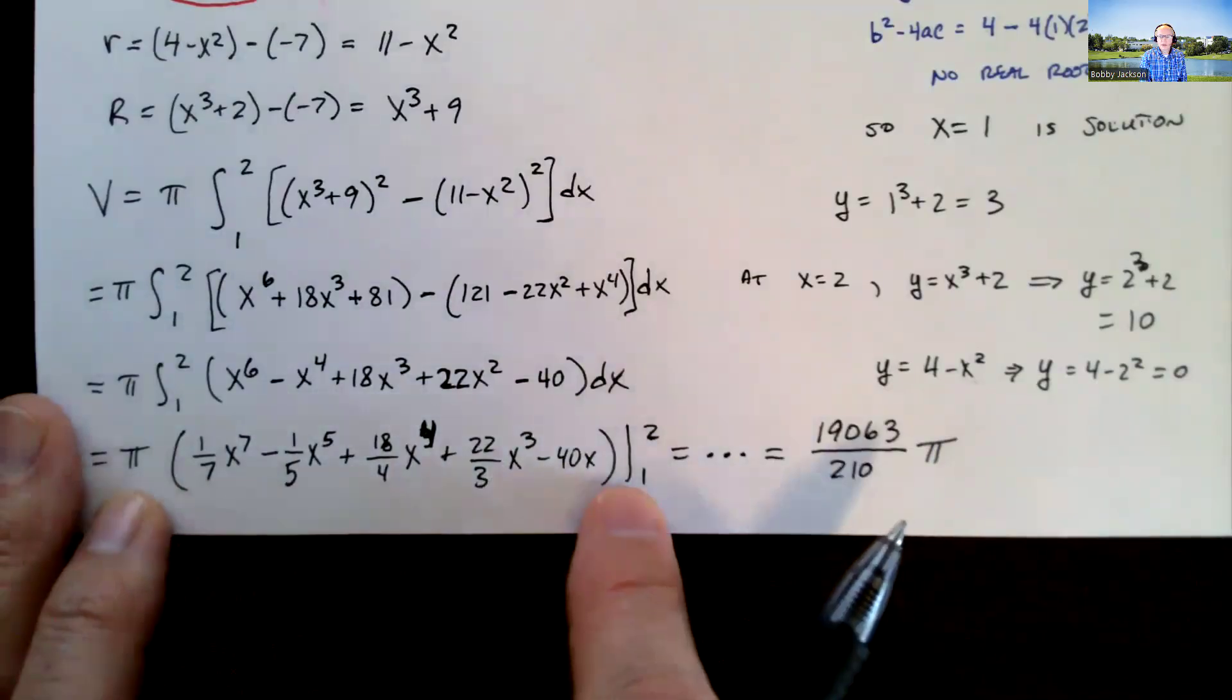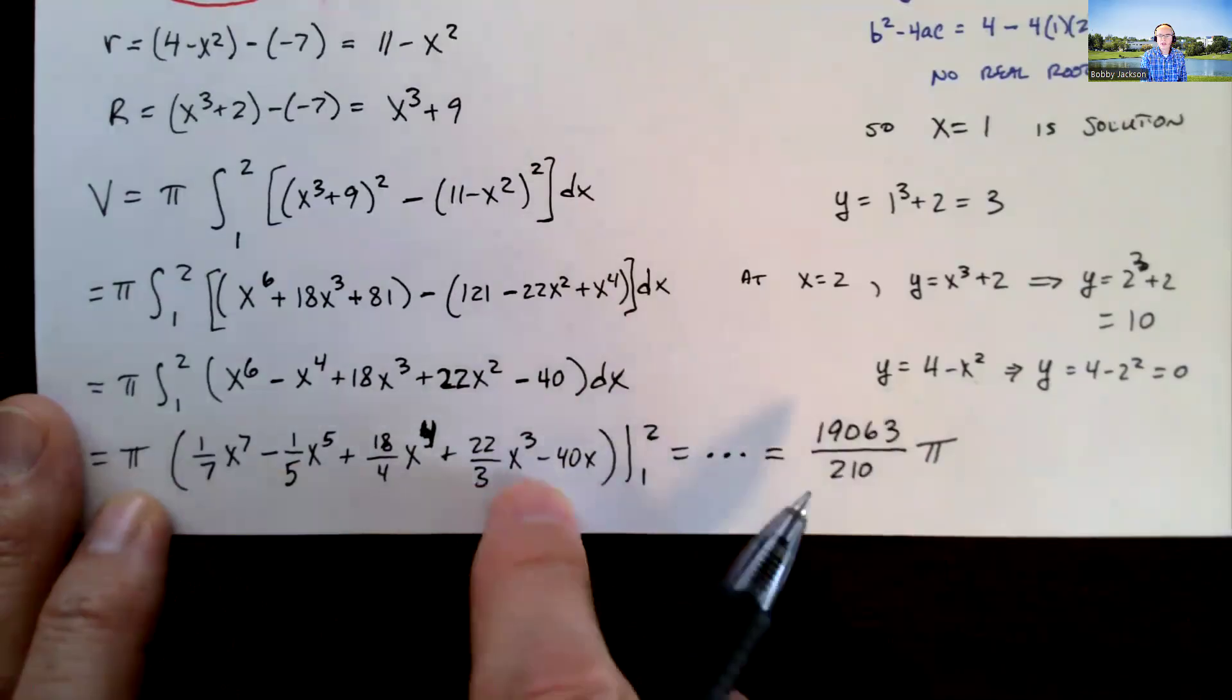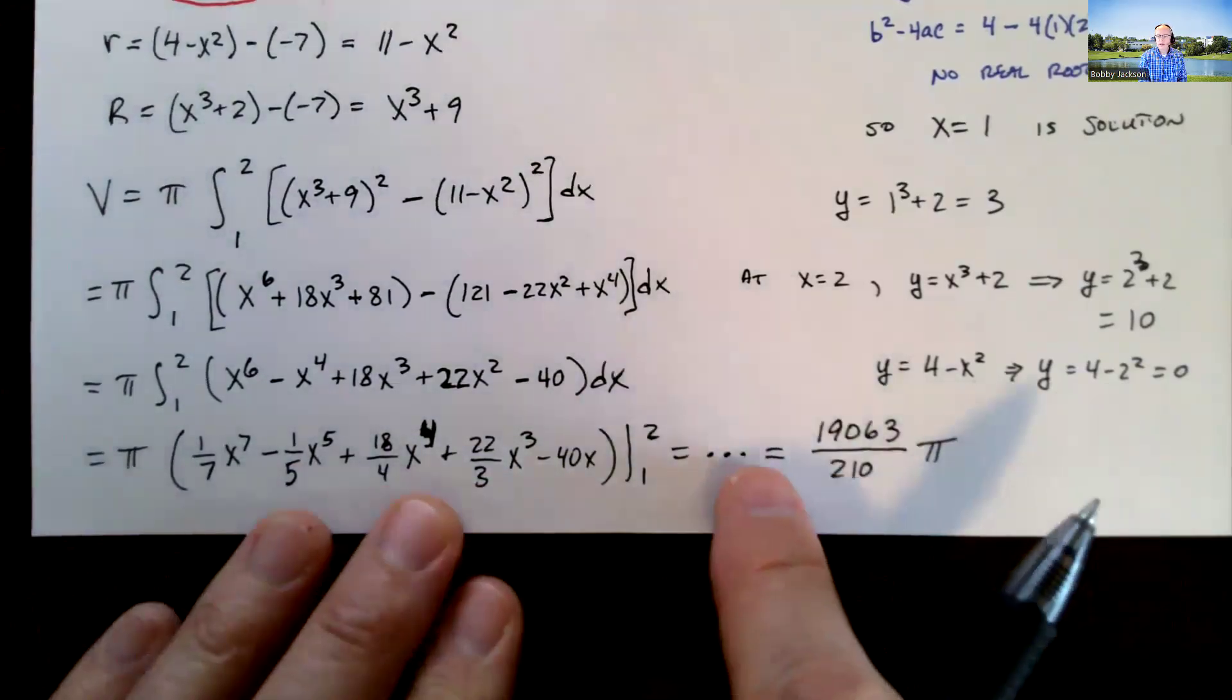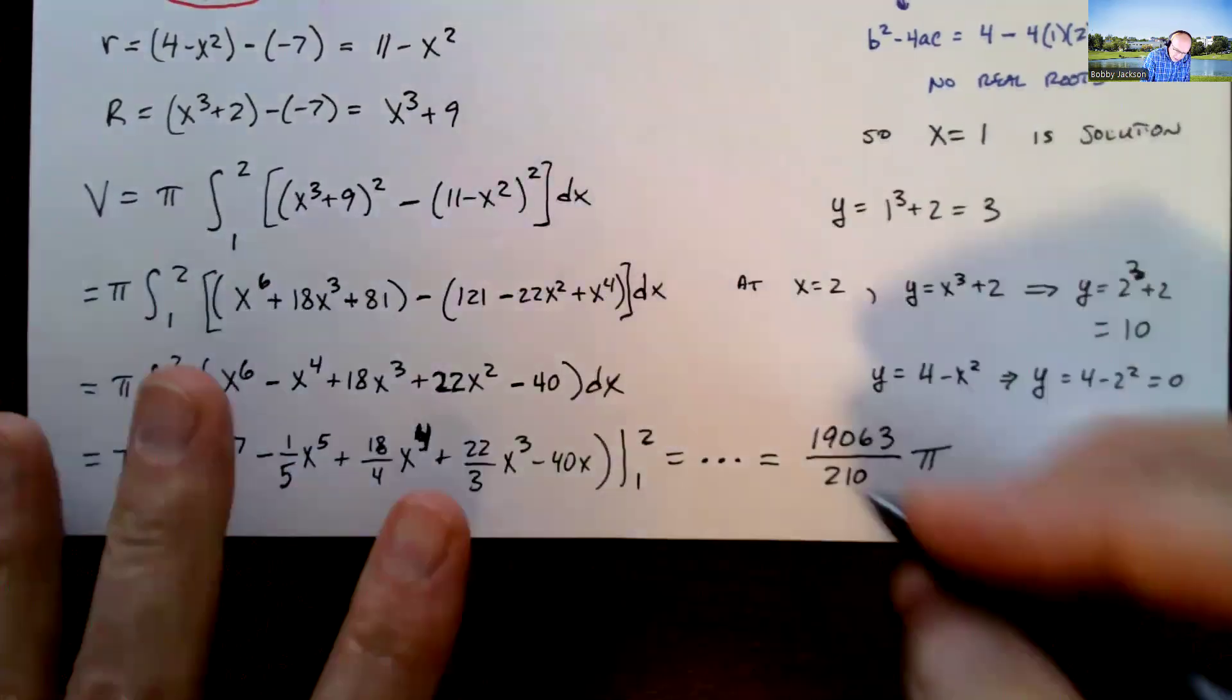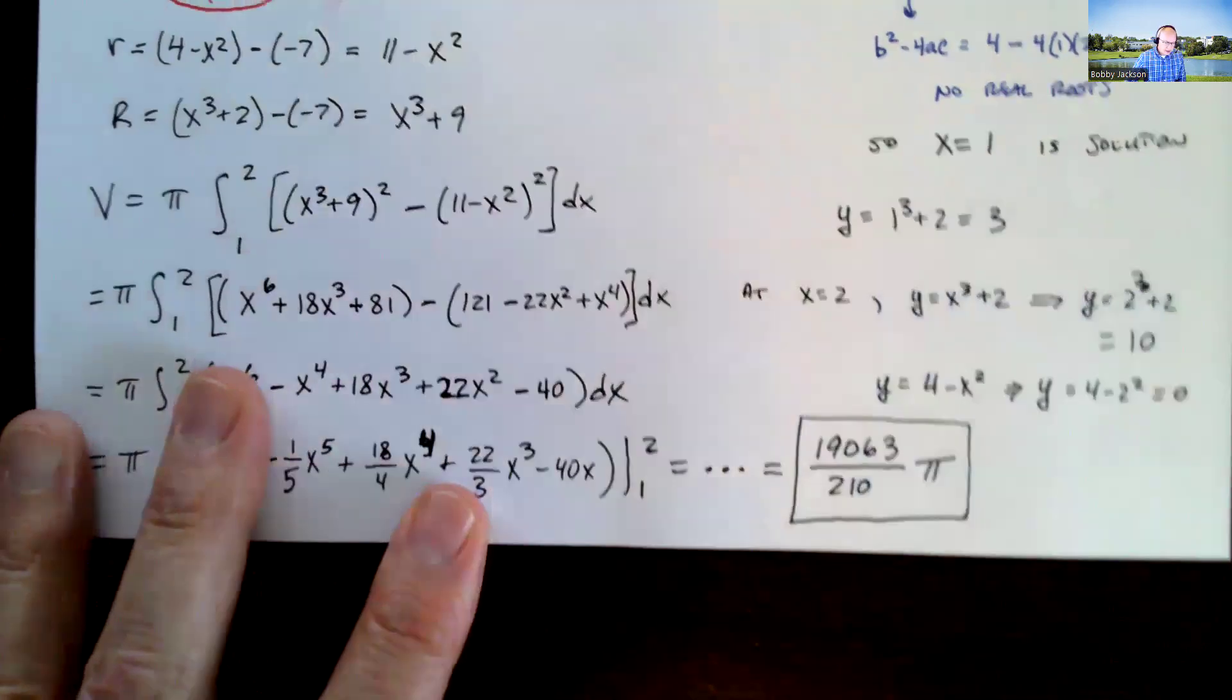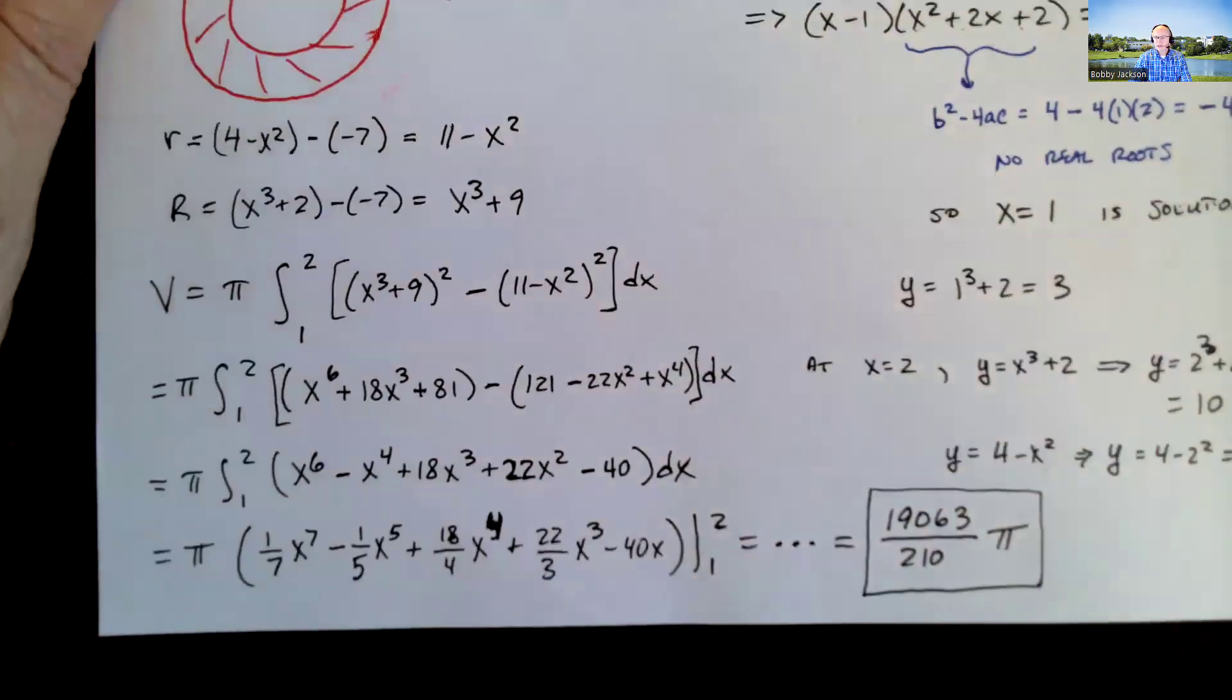A little bit of arithmetic to do here. Plug in x equal 2, plug in x equal 1, subtract. You can use technology to help, perhaps. But your simplified fraction is 19,063 divided by 210, don't forget, times the pi. And there is our volume for this solid, which I'm not going to try and draw. But hopefully this is helpful.